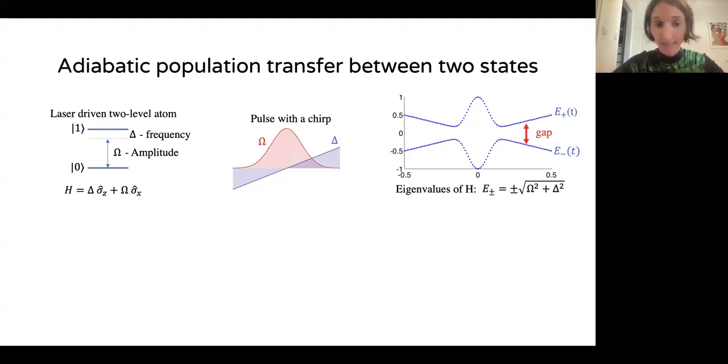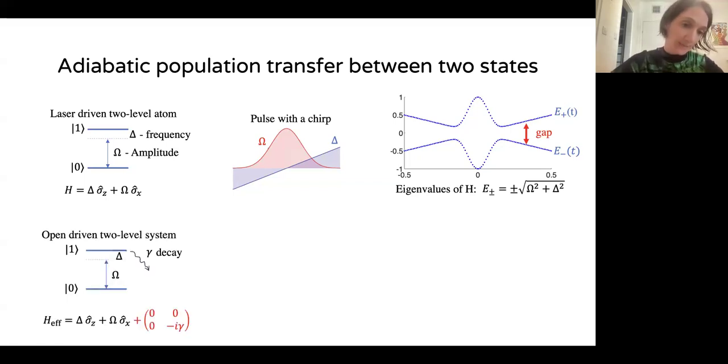Now let's see what happens in open systems. We can include the possibility to decay from the excited level into additional levels, and we can represent this decay rate by gamma. For example, if we have spontaneous emission or other processes through which the atom decays. Under some circumstances, we can describe this with an effective Hamiltonian.